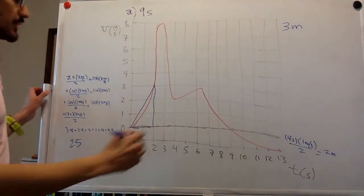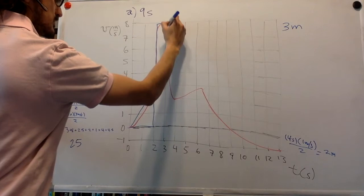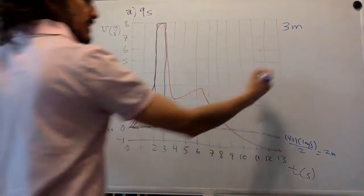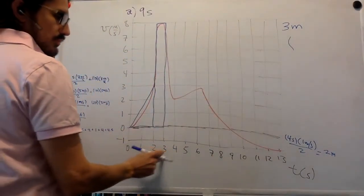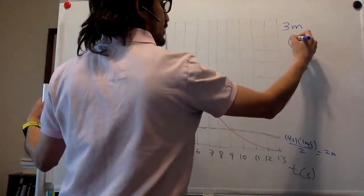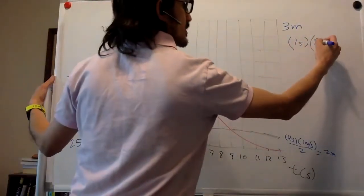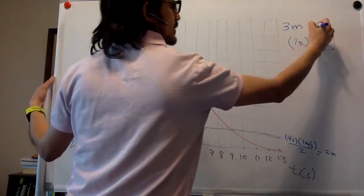And then this one over here, it's a rectangle. Right? And so the width is one, from two to three. So one second. And the height is eight meters per second. Seconds go away, and this is just eight meters.